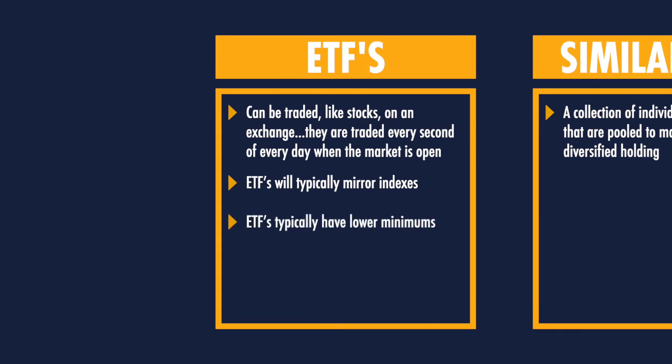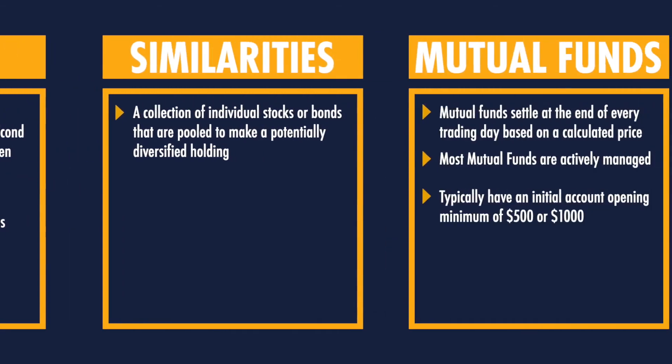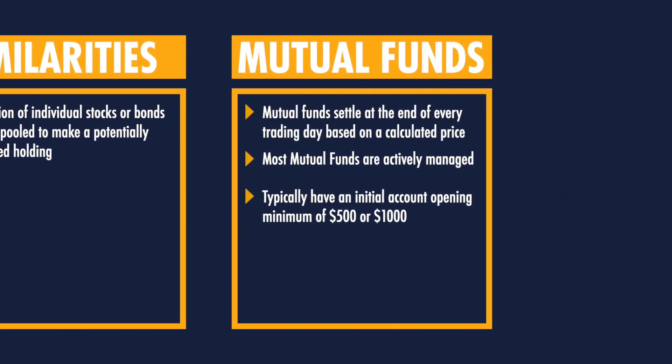Third, ETFs typically have lower minimums. Basically, if you want to purchase one share of an ETF, say at $24 per share, you can, versus mutual funds, which typically have an initial account opening minimum of, say, $500 to $1,000.